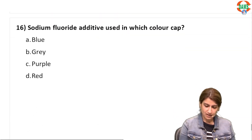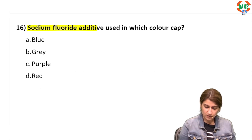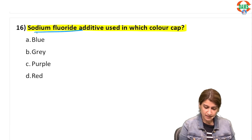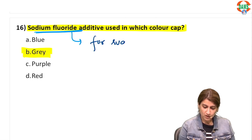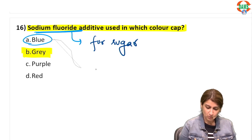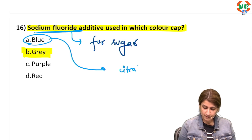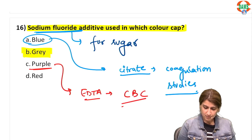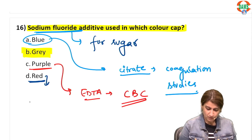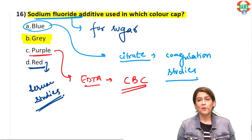Sodium fluoride additive is used in which color cap? Sodium fluoride is used in the gray vial for sugar estimation. Blue contains citrate for coagulation studies. Purple or lavender contains EDTA for CBC. Red is used for serum studies. That concludes all the questions — best of luck to everyone, thank you.